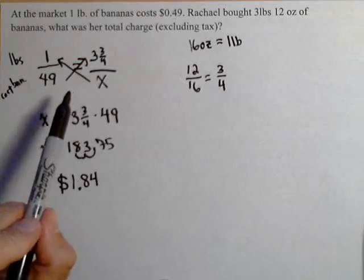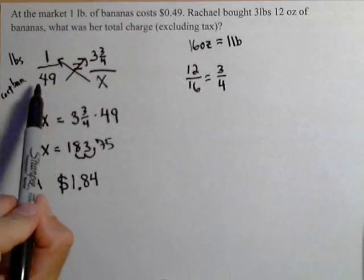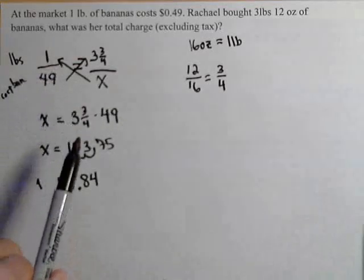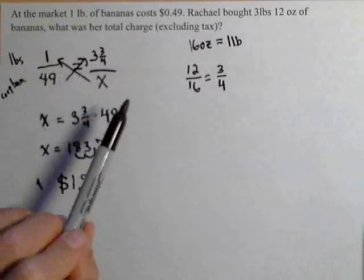The big thing in setting up a proportional reasoning problem is make sure you have the like types either horizontally across or vertically up and down, never diagonally.